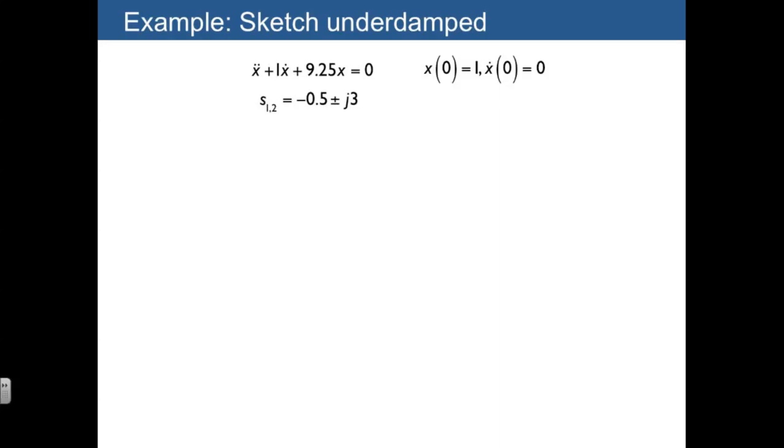Here's an example of using that information to sketch the response of an underdamped system. Here we have roots negative 0.5 plus or minus j times 3.